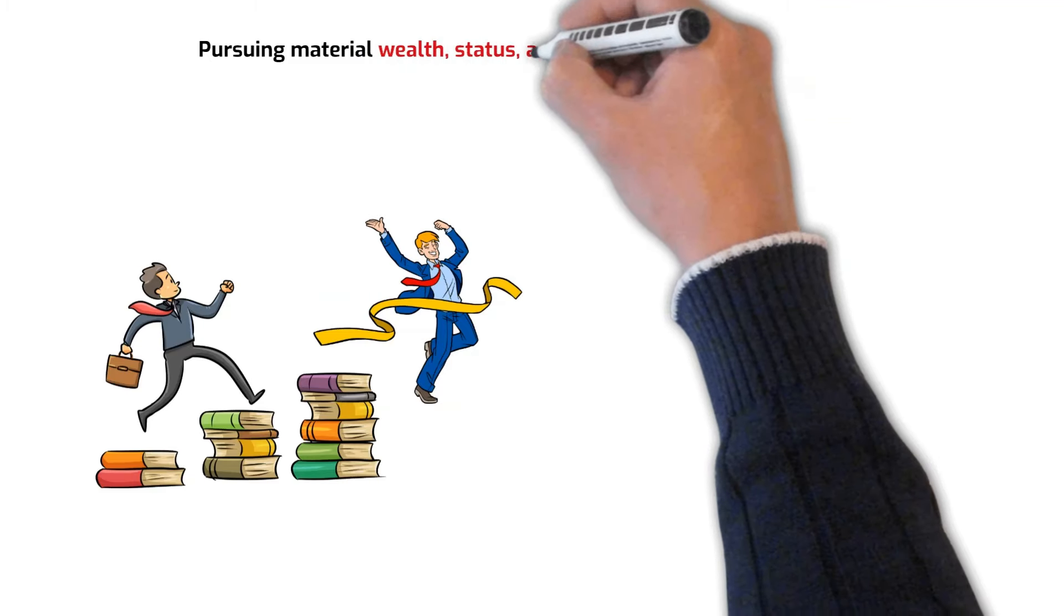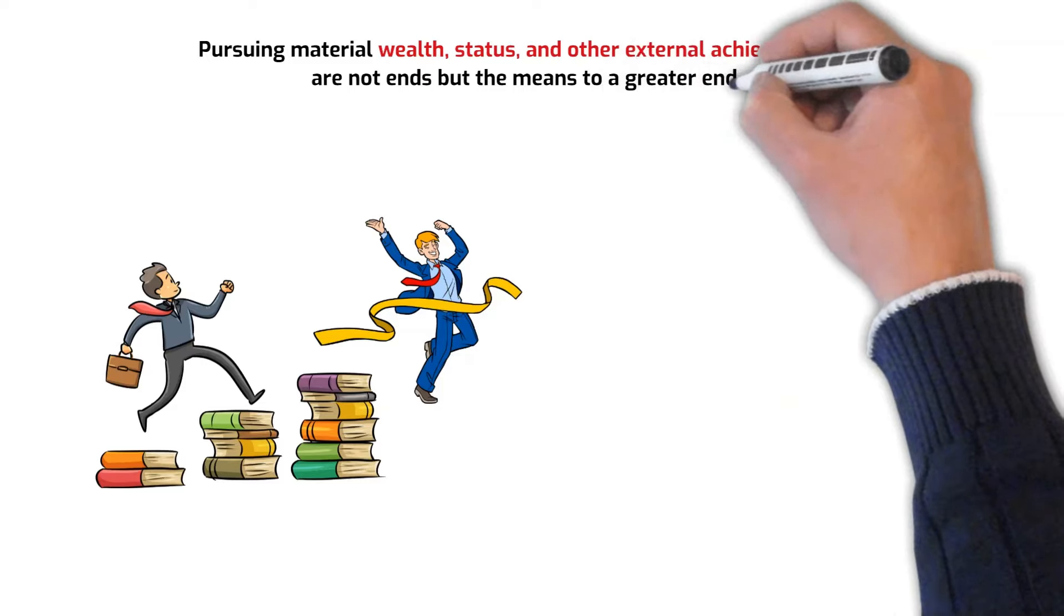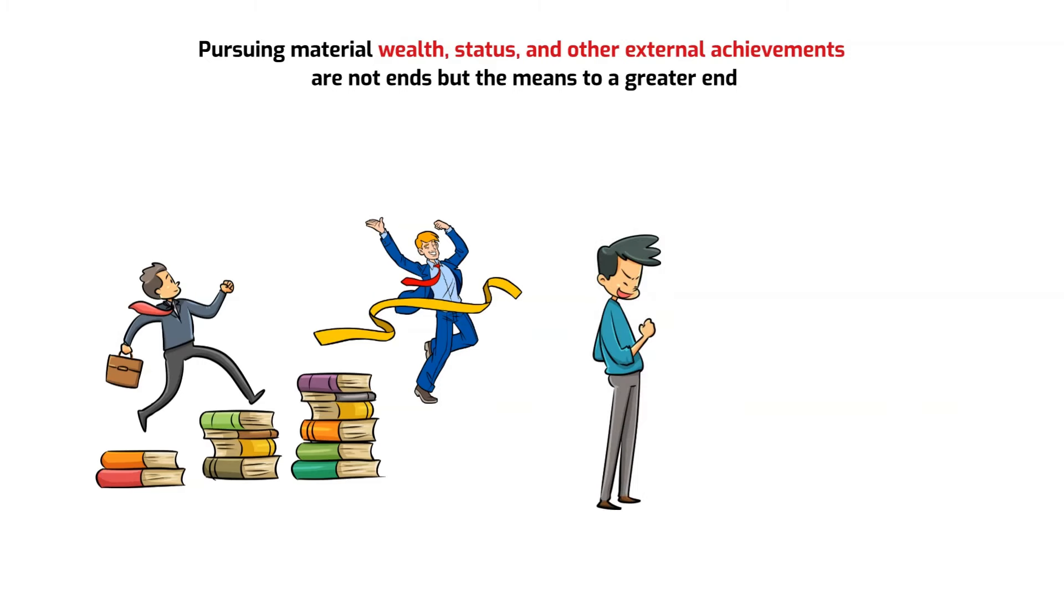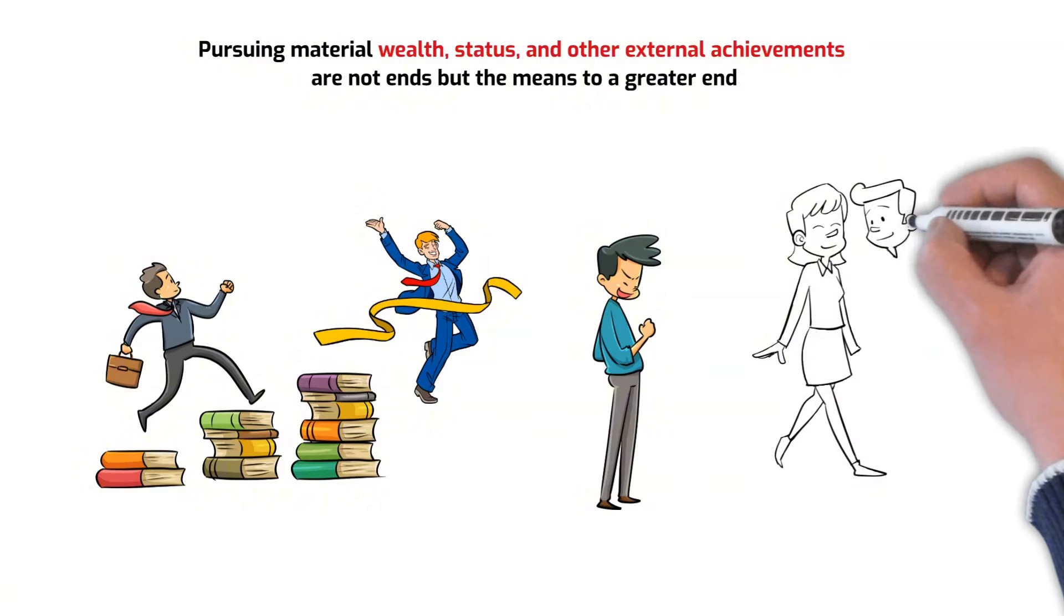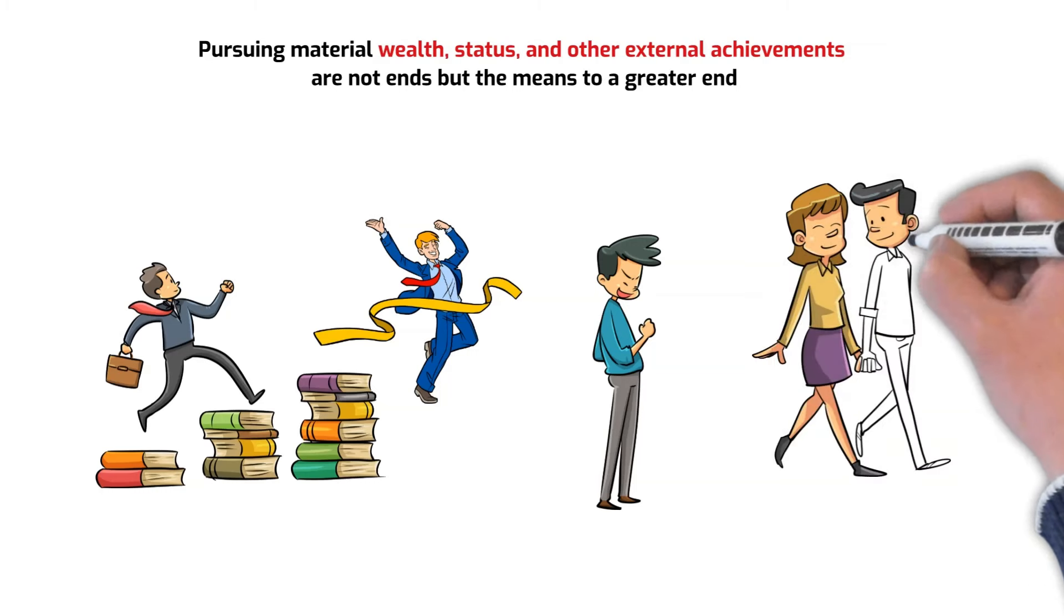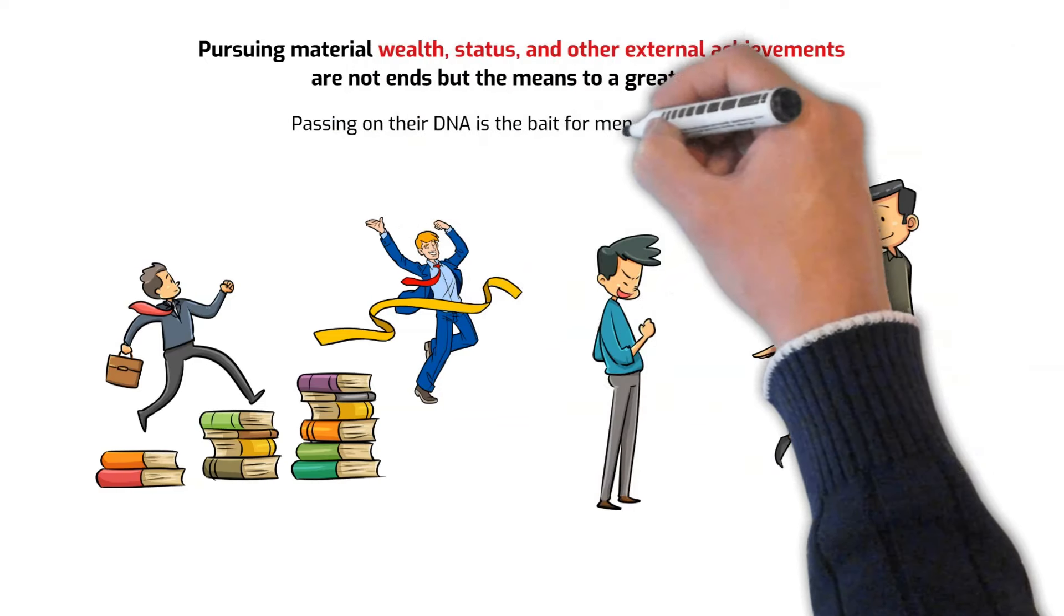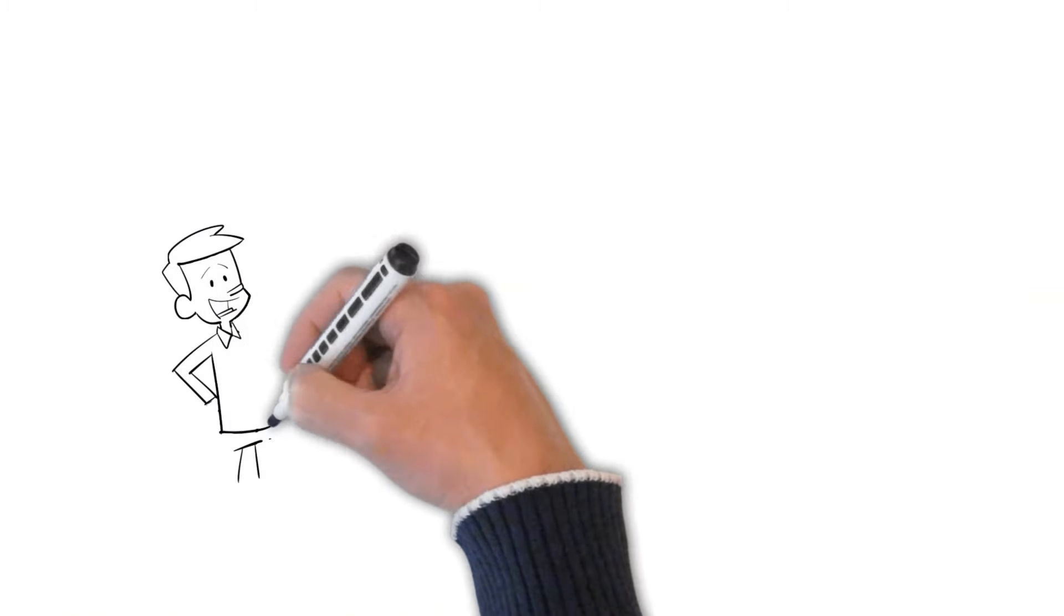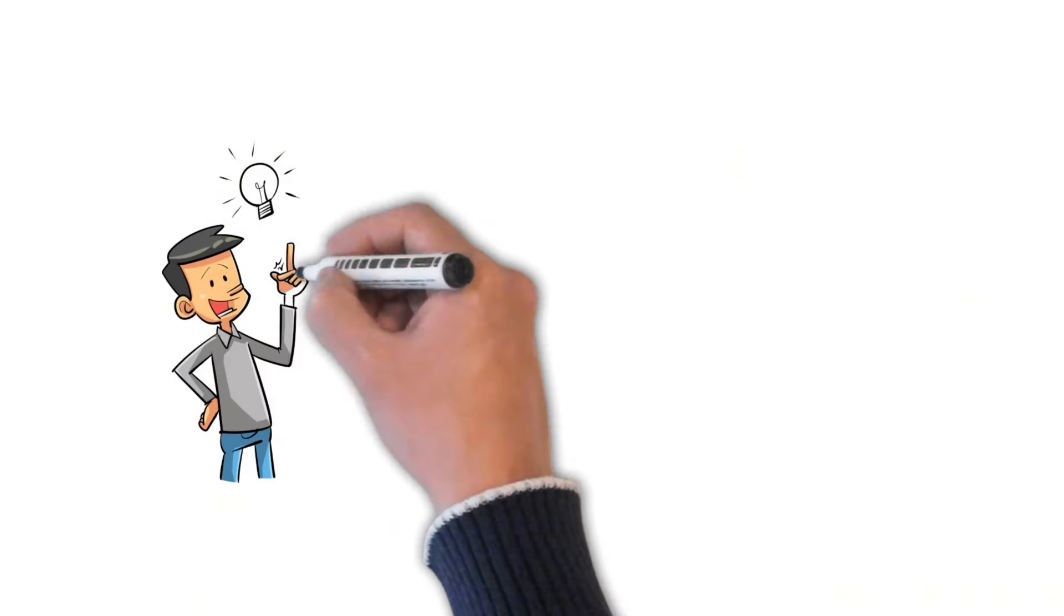Pursuing material wealth, status, and other external achievements are not ends but the means to a greater end. They are like bait that drives us to strive for more and become better versions of ourselves. For example, a man who desires to be with a particular woman may find himself motivated to dress better, exercise more, and seek more lucrative career opportunities to attract her. Passing on their DNA is the bait for men and women, and procreation and evolution are the goals. Awareness of this quirk allows you to operate more effectively and with more autonomy in this seemingly chaotic world.